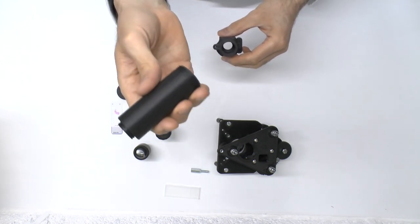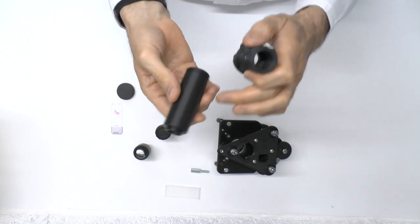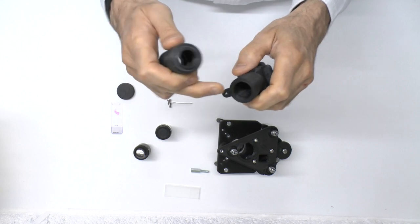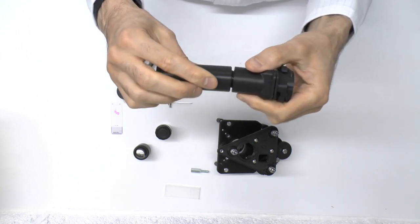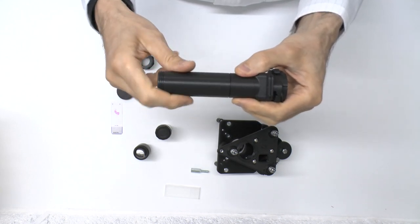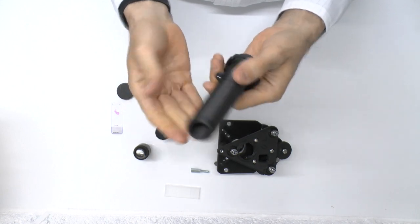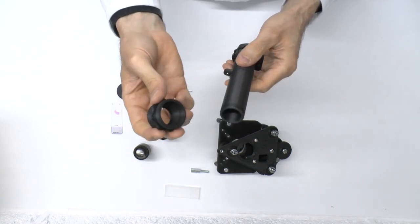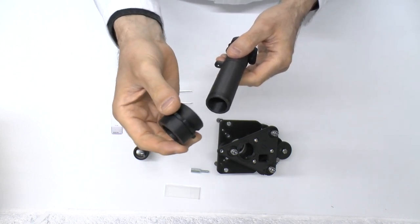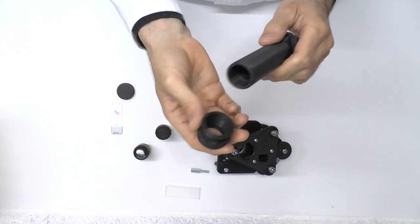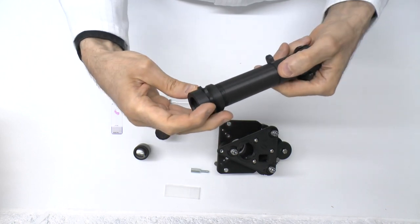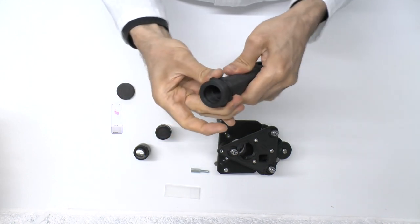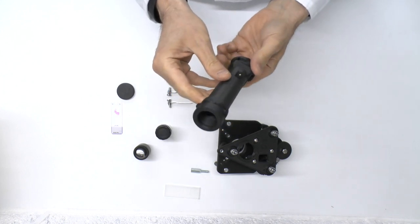Now we'll take the monocular tube. And there's a wide thread at one end and a narrow thread at the other end. The narrow thread goes into the top of the filter block. So like this. Finger tight. It doesn't have to be too tight. And then on top of that comes the ocular lens holder, which is already partially assembled for you. That just screws on here. So now you have your optical tube.